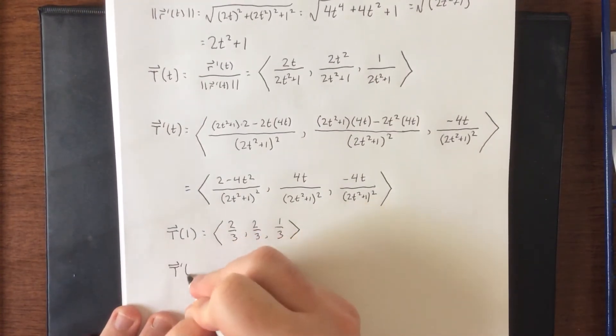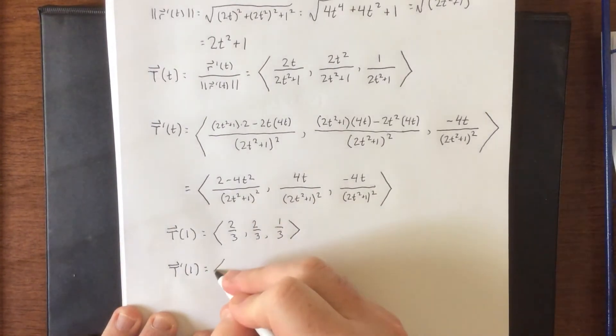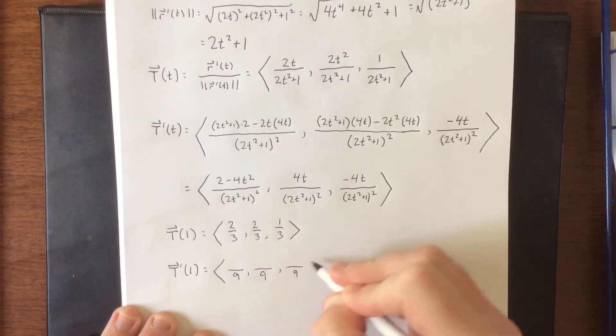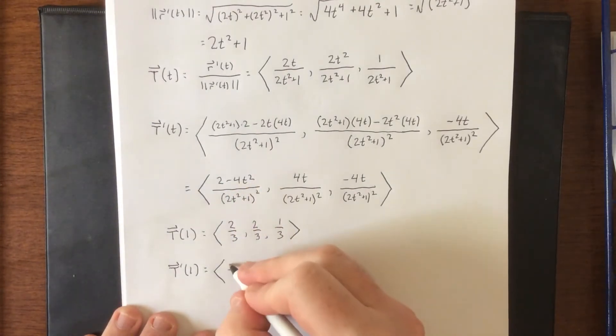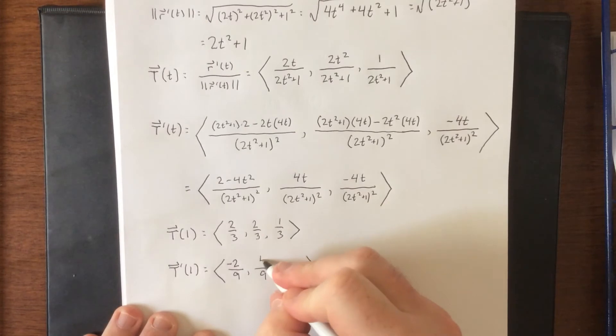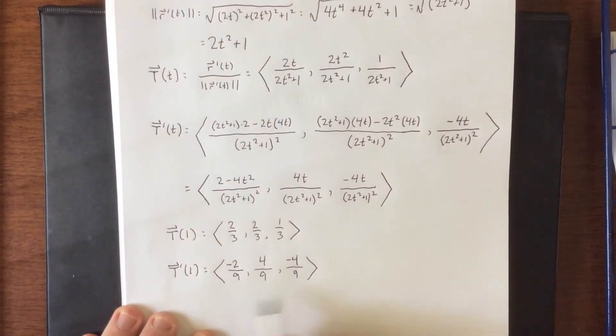For T prime of 1, this is where I'm going to be plugging in little t equals 1 to all three of these. Your denominators will all be 3 squared. So denominator of 9, denominator of 9, and denominator of 9. First numerator is going to be 2 minus 4. That'll be negative 2. And we'll have 4 times 1, and negative 4 times 1. This is not a unit vector, but it is orthogonal to the given vector.